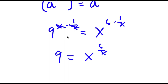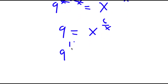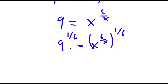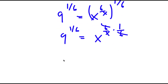Now I'm going to take the power of 1 over 6 on both sides. So now I have 9 to the power of 1 over 6 is equal to x to the power of 6 over x to the power of 1 over 6. And again, this equals x to the power of 6 over x times 1 over 6. These two cancel out, so I'm left with 9 to the power of 1 over 6 is equal to x to the power of 1 over x.